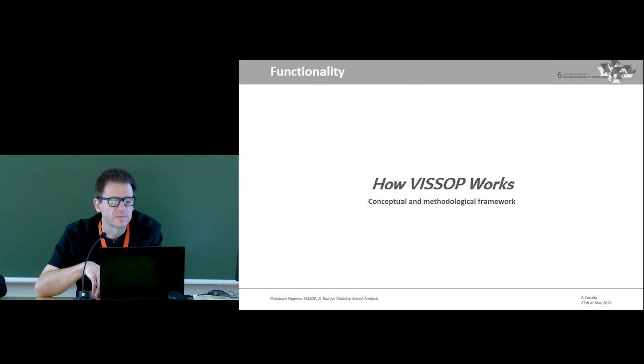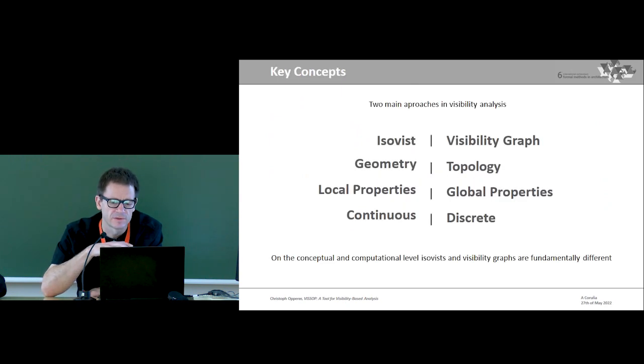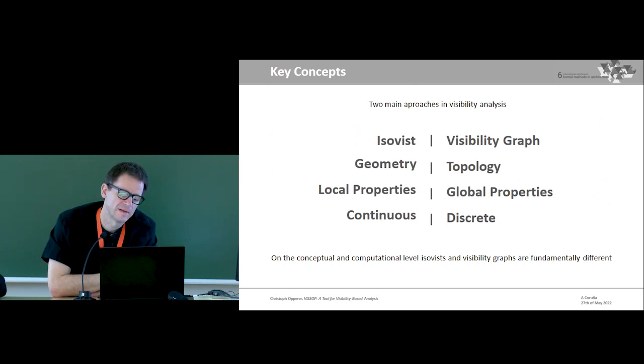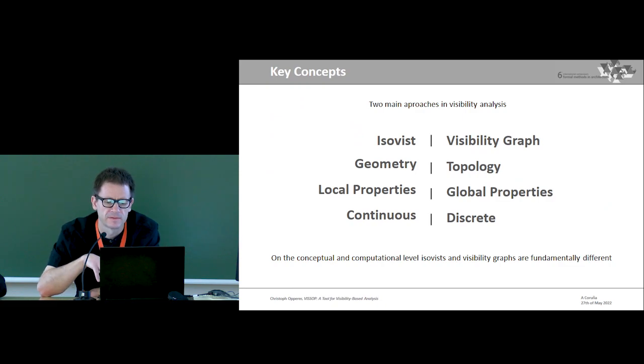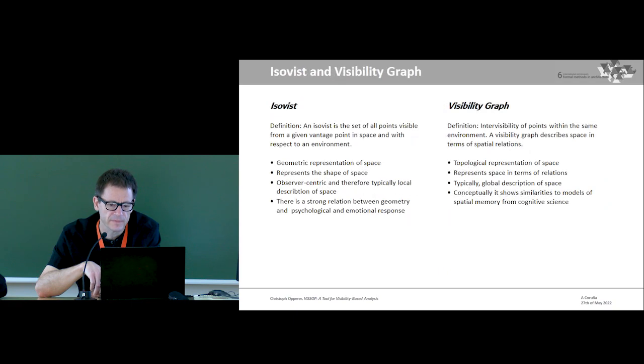How VisApp works, the conceptual and methodological frameworks. Generally there are two main approaches in visibility analysis, ISOVIST and visibility graph analysis. Whereas visibility graphs are based on topological measures and global properties, and ISOVIST are geometry based and describing mostly local properties. Conceptually they are fundamentally different. This is just an overview of differences between the two sorts of visibility analysis tools. I'm going to skip this.